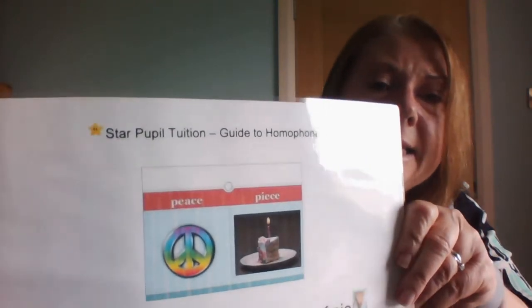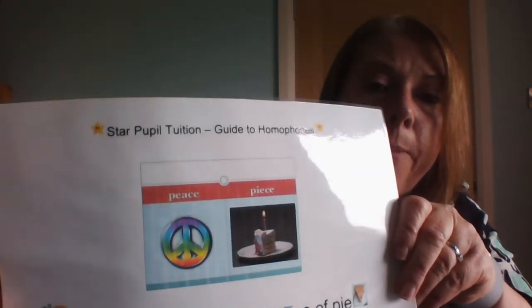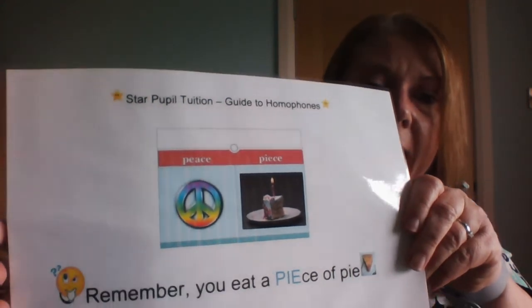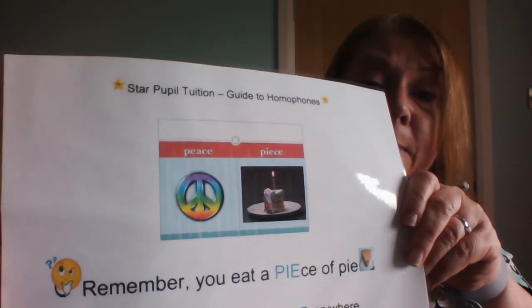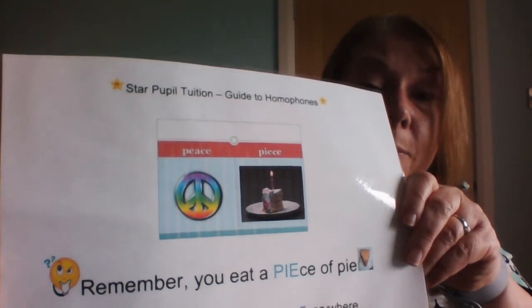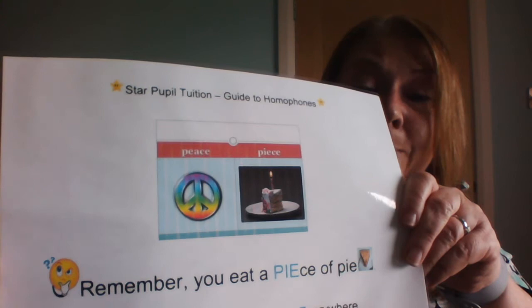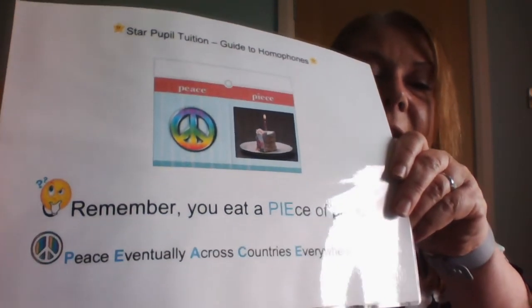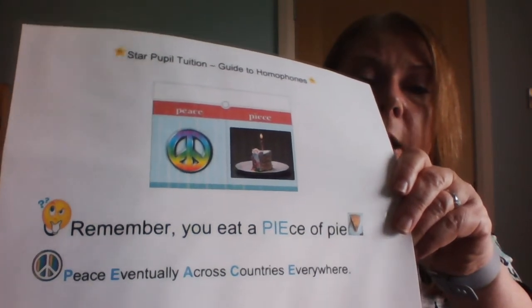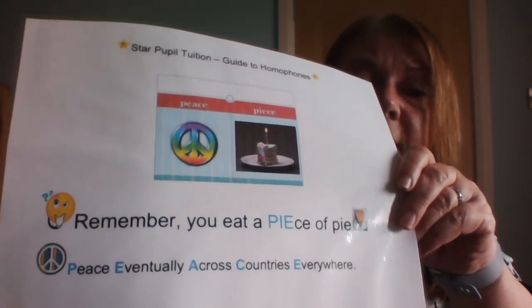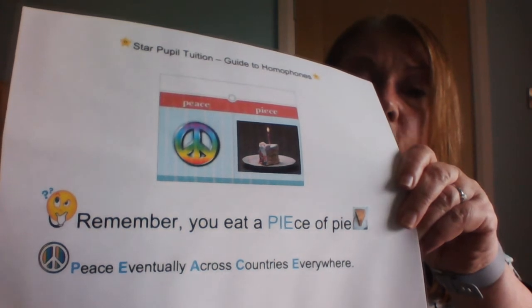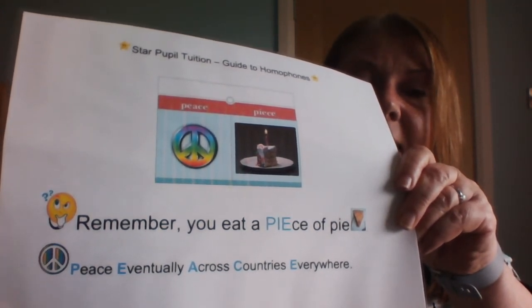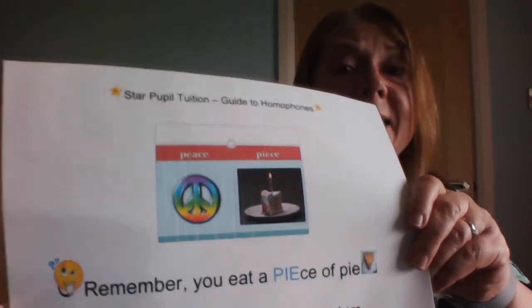The next pair is PEACE and PIECE. We've got peace as in 'peace on earth,' and piece as in 'a piece of birthday cake.' The trick is: you eat a piece of pie — P-I-E — so it's P-I-E-C-E. Remember 'a piece of pie' for that spelling. And here's a mnemonic for the other: 'Peace Eventually Across Countries Everywhere' — P-E-A-C-E.